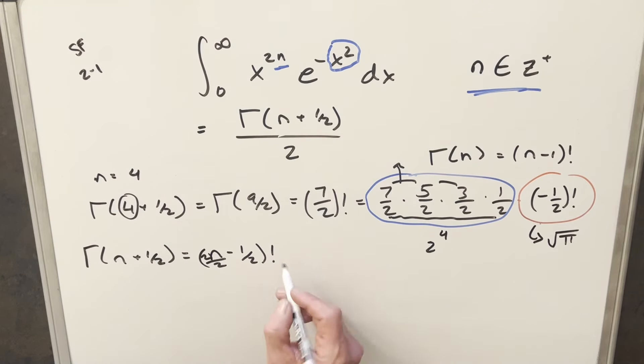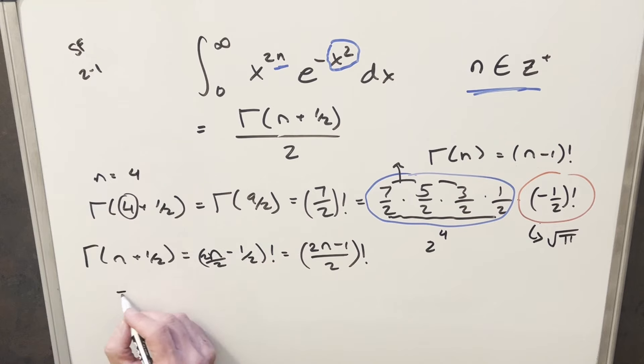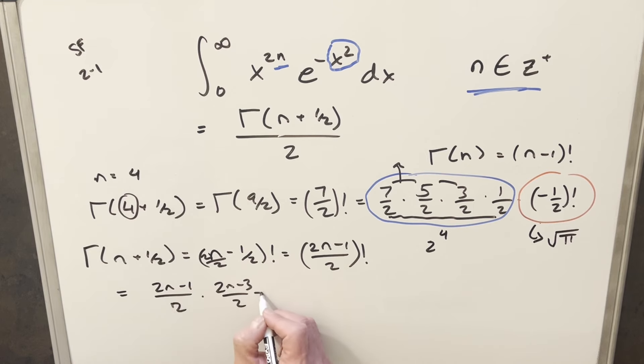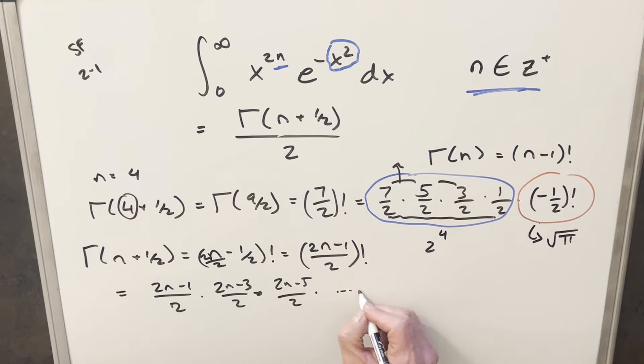But expanding this thing out, it's just going to be something like 2n minus 1 over 2 times 2n minus 3 over 2 times 2n minus 5 over 2. And this will go all the way to 1 half and then minus 1 half factorial, but we're just going to write that as square root of pi.